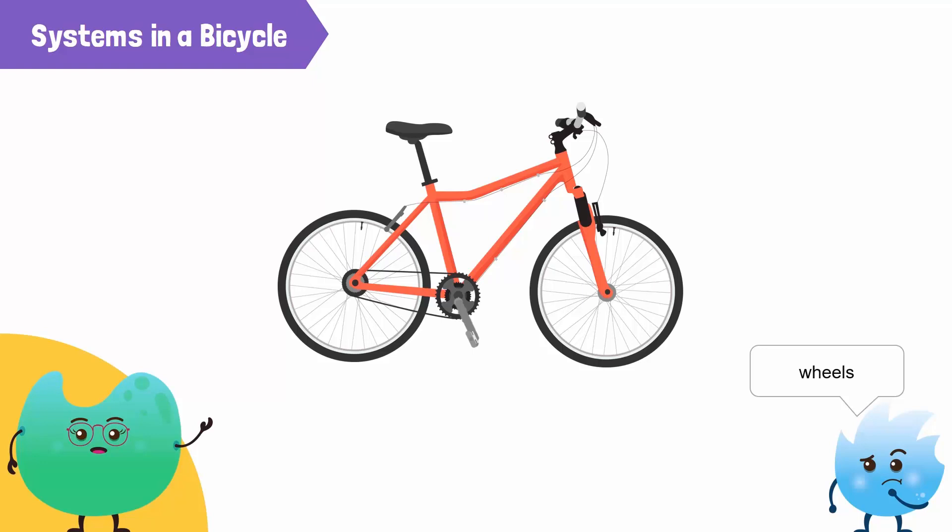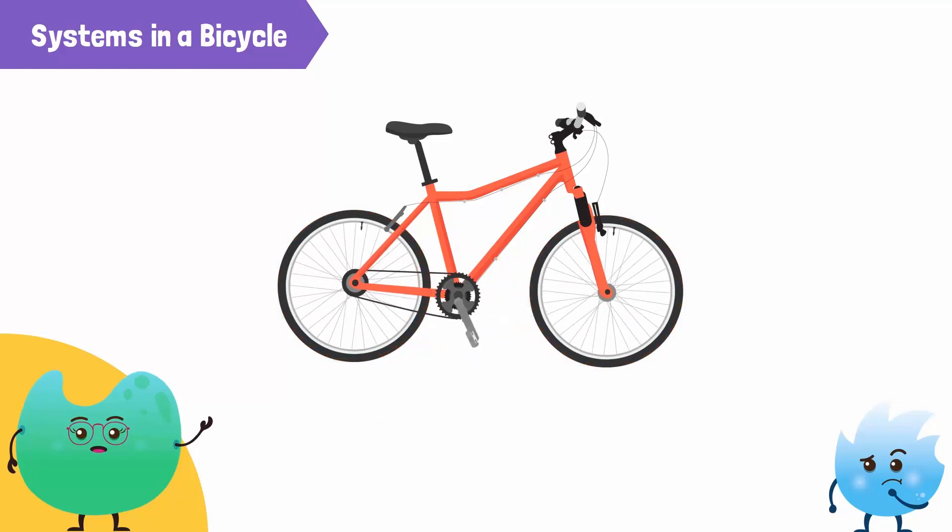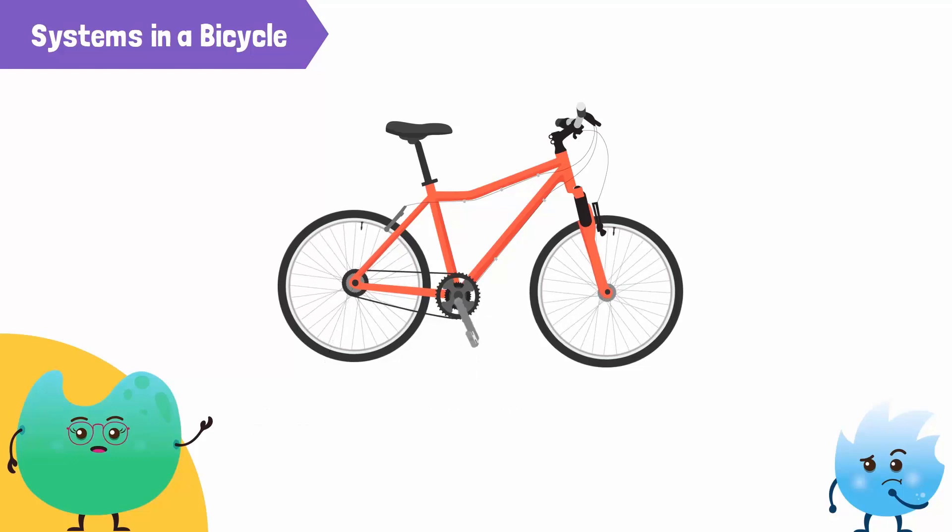In a bicycle, moving an axle through a smaller distance results in a larger distance covered by the wheel. The pedals are attached to a driver gear. The follower gear is attached to the axle of the rear wheel. The follower gear is driven by the driver gear with the help of a chain passing over both gears.